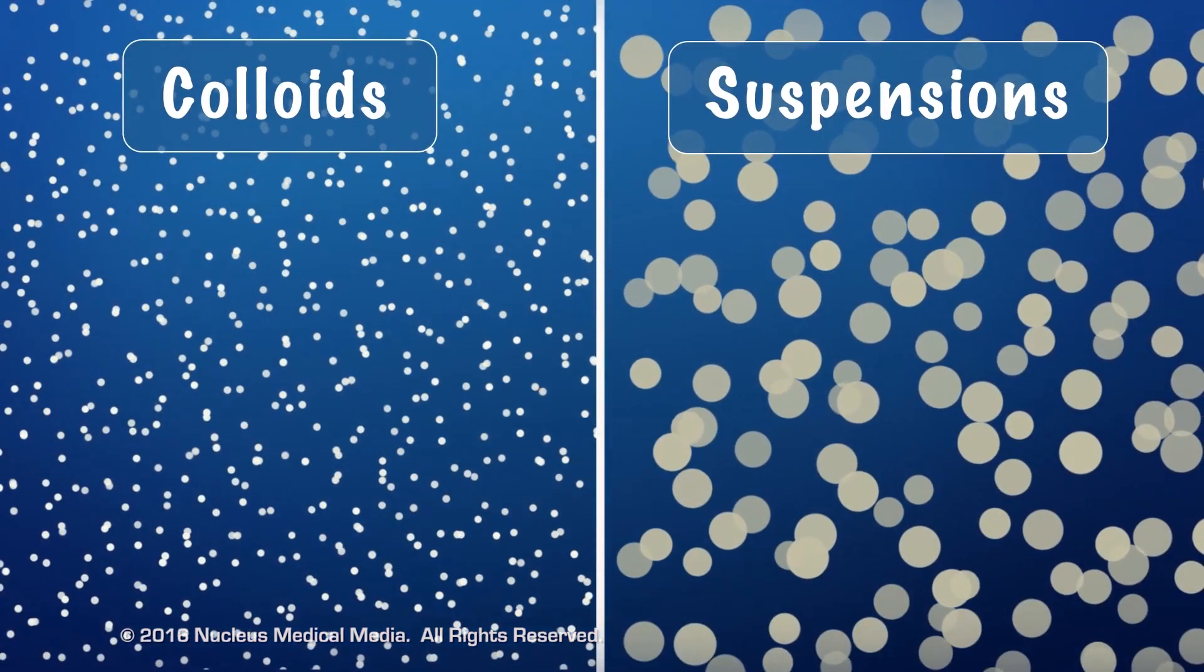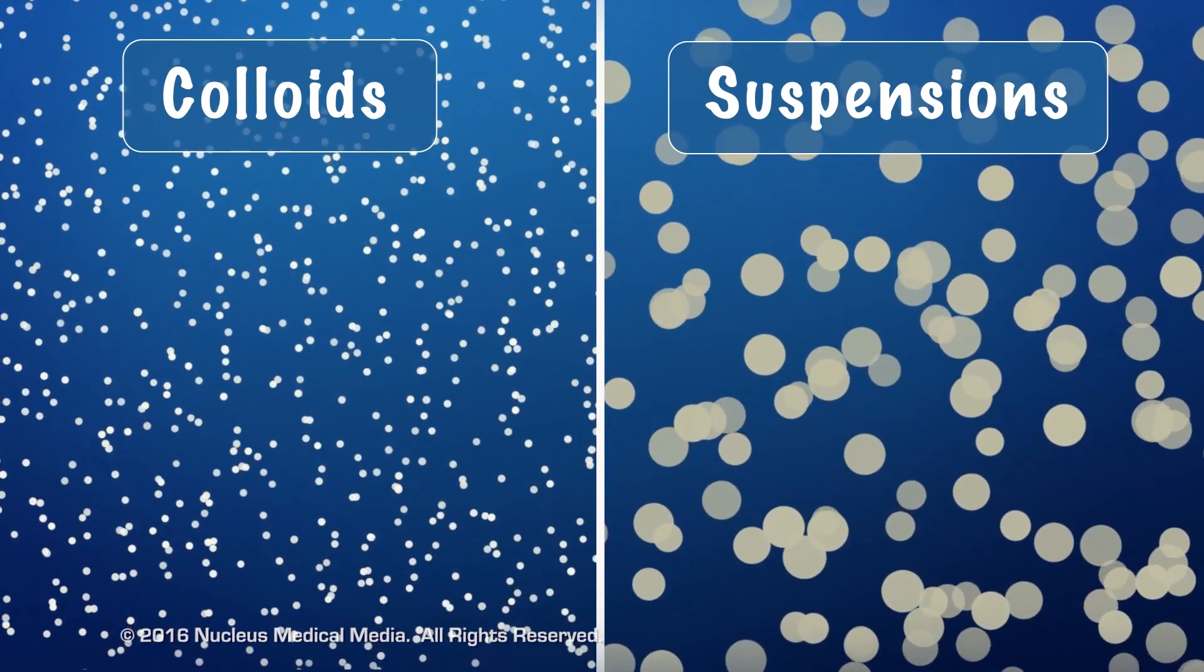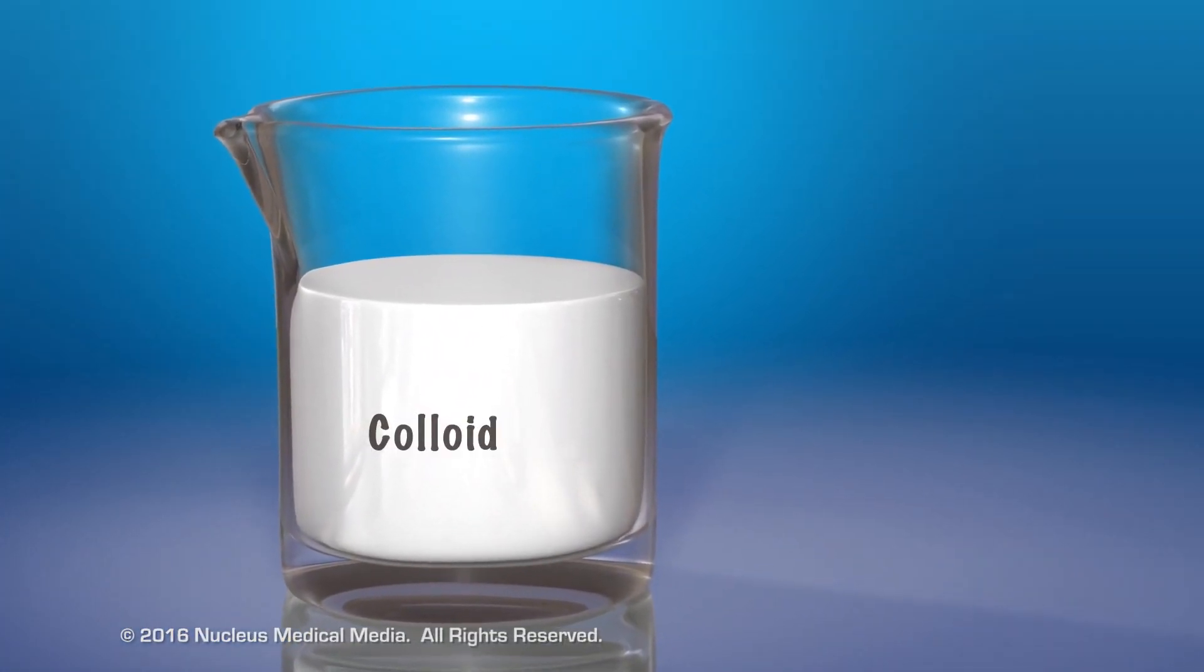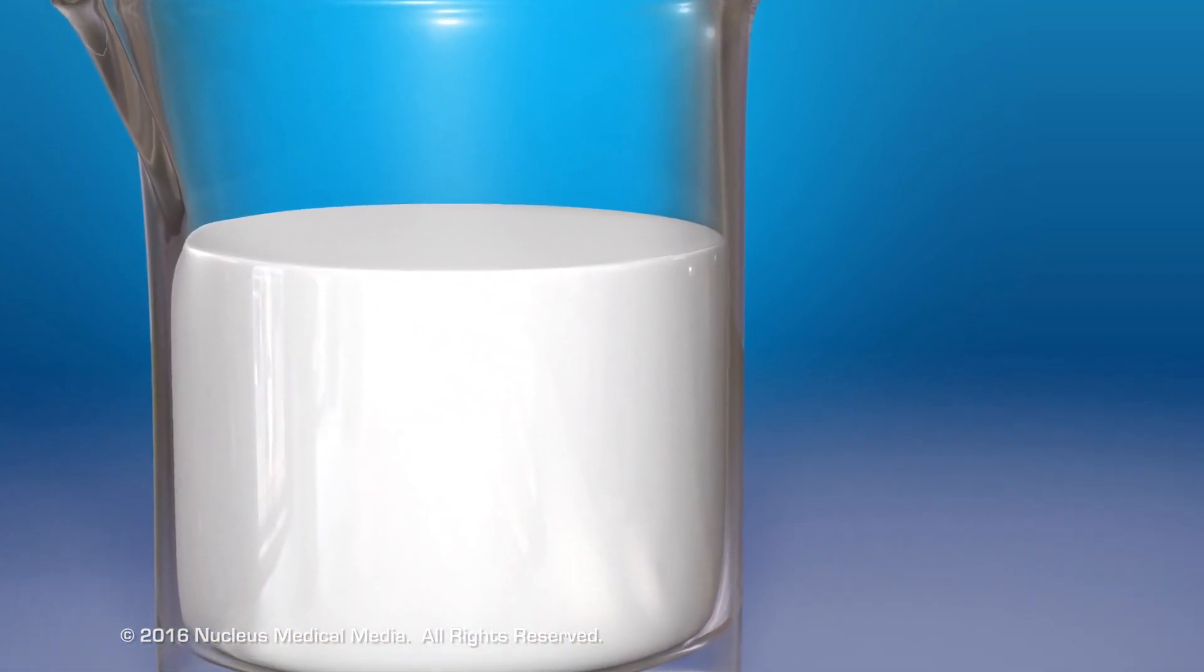Colloids and suspensions differ primarily in the size of their particles within the water. In colloids, the particles mixed in the water are larger than the water molecules, but are still too small to see with the naked eye.